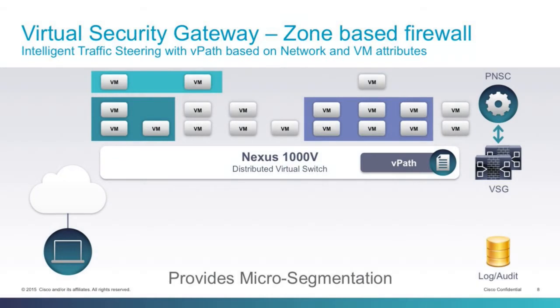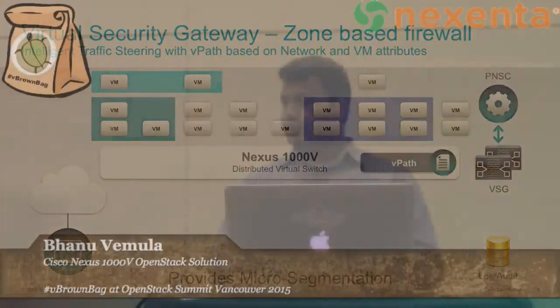The first thing is security. We offer something called the Virtual Security Gateway, which comes with the solution. The Virtual Security Gateway is a layer 2 zone-based firewall providing stateful firewall functionality. You can identify traffic based on both network and virtual machine attributes, giving you micro-segmentation functionality. If you're trying to secure east-west traffic within your data center, you can provide stateful firewall functionality for that traffic using the Virtual Security Gateway.